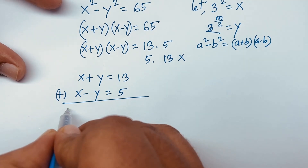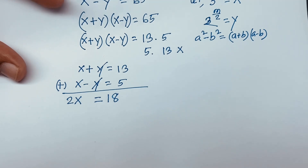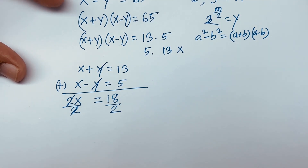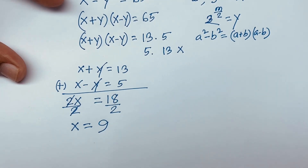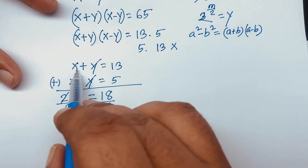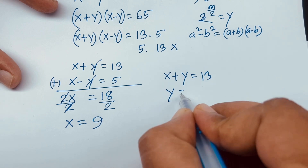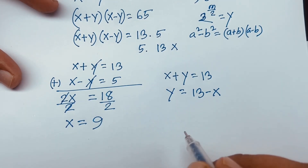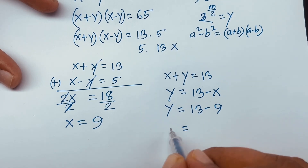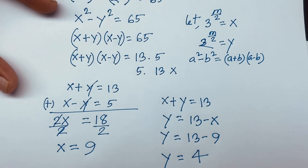Adding both equations: X + X gives 2X, and the Y terms cancel. So 13 plus 5 equals 18, meaning 2X = 18, and dividing both sides by 2 gives X = 9. To find Y, since X + Y = 13, we get Y = 13 minus X = 13 minus 9 = 4.